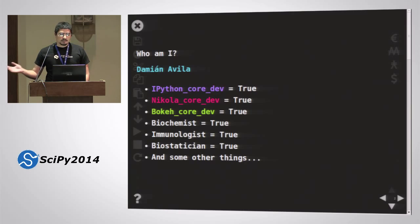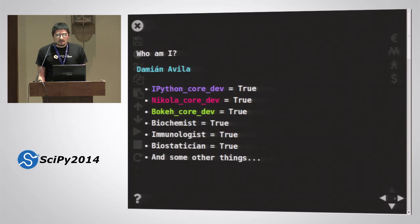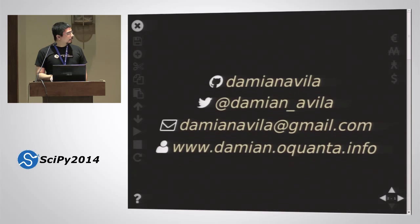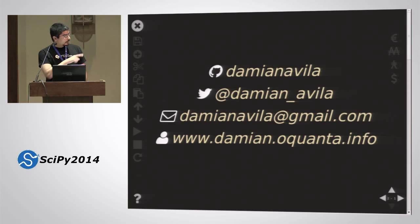Who am I? My name is Damien Avila. I contribute to some projects — in particular IPython, Nicola, and Bokeh projects are projects where I spend a lot of time. I am also a biochemist in immunology; my PhD was in immunology. Here you have all ways to contact me: my GitHub username, my Twitter, my email. I will try to answer you as soon as possible. Below is the URL for my blog where I sometimes write a little bit.